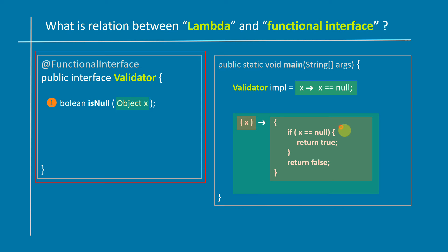In the functional interface, we have a single method which is isNull. The lambda we have written is an implementation of that one method present inside the functional interface. In other words, lambda is an implementation of a single abstract method.